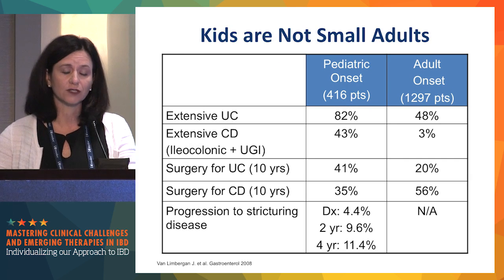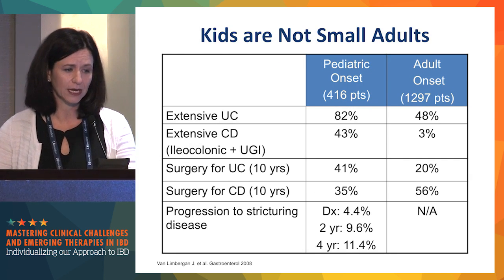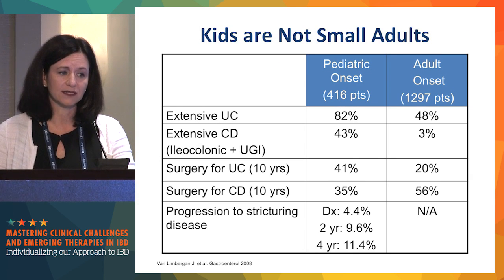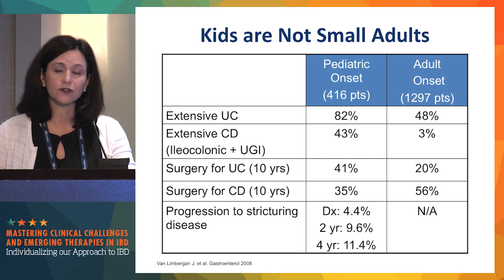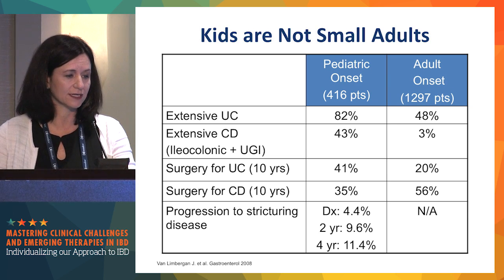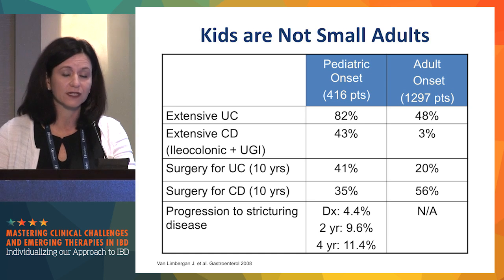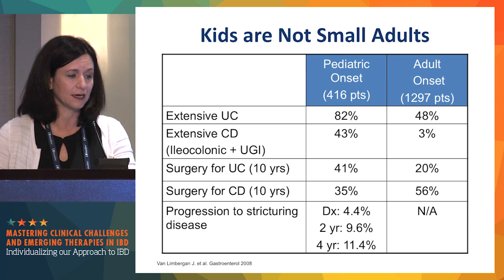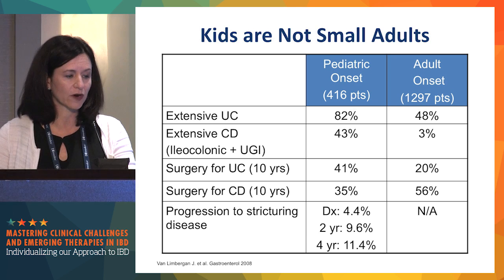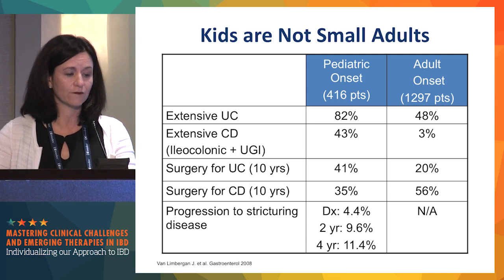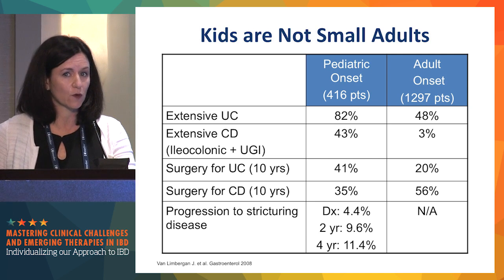Children are not just small adults. A study by Van Limbergen et al. compared pediatric onset versus adult onset Crohn's and colitis in roughly 400 pediatric patients. Ulcerative colitis was much more likely to be extensive in pediatric onset disease. Crohn's was also more likely to be extensive, with iliocolonic and upper GI tract involvement at 43 percent versus 3 percent. The need for surgery was much higher in pediatric UC patients at 10 years, and we see impressive rates of stricturing disease progression: 4.4 percent at diagnosis, nearly 10 percent by two years, and 11.4 percent at four years.